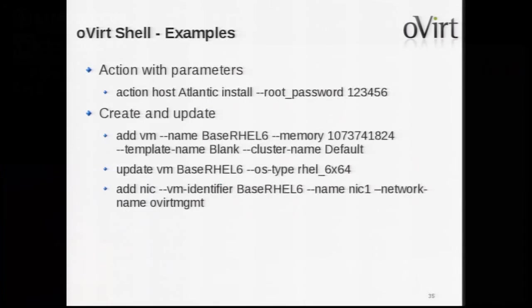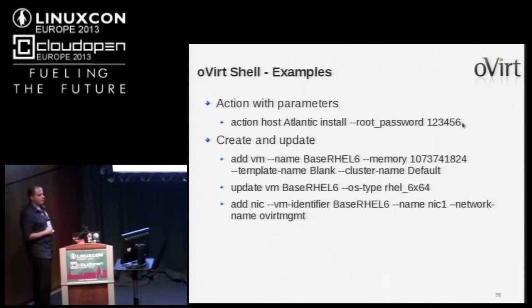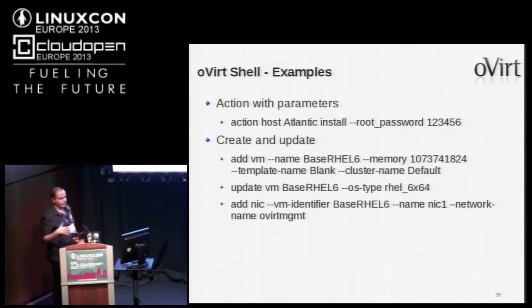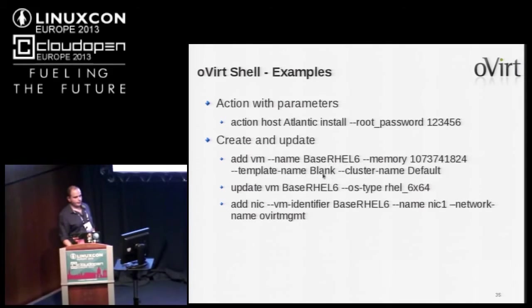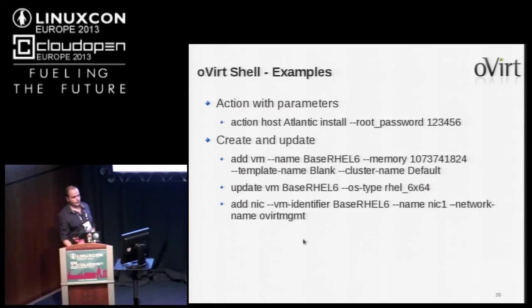Some example commands: to install a new host, you do 'action host atlantic install' and give the root password — the only parameter needed. The CLI will show you what parameters are available for that operation. To add a new VM, you specify the blank template and default cluster. You can update the OS type, then add a new NIC to the VM by specifying 'add nic', the VM identifier, the NIC name, and the network.